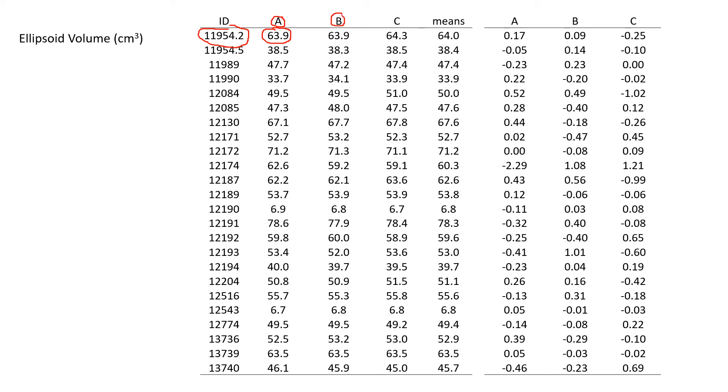And then on a different day, I measured that same individual, got length, width, and height, and I came up with another 63.9 value for its ellipsoid volume. On the third occasion, I did those things, and I wound up with an ellipsoid volume that day of 64.3.